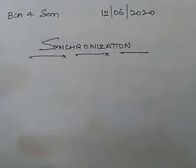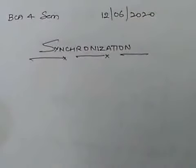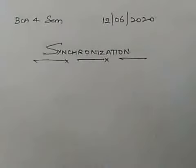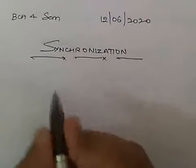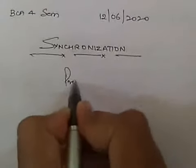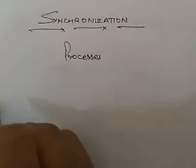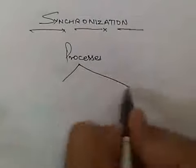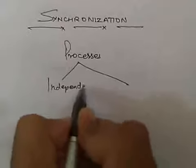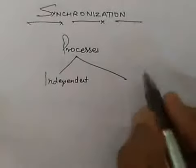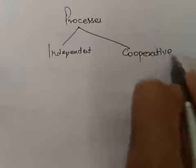Today we will study the concept of synchronization in an operating system. We know that we have various processes in an operating system. These processes are of two types: number one, we have independent processes, and the other one, we have cooperative processes.